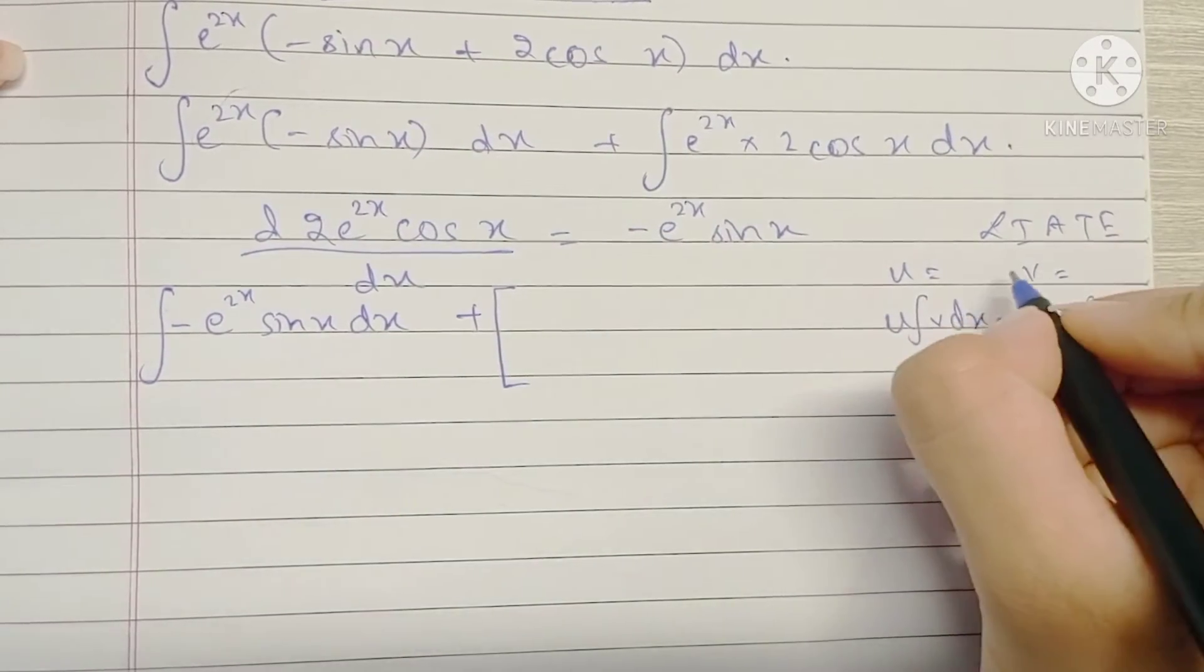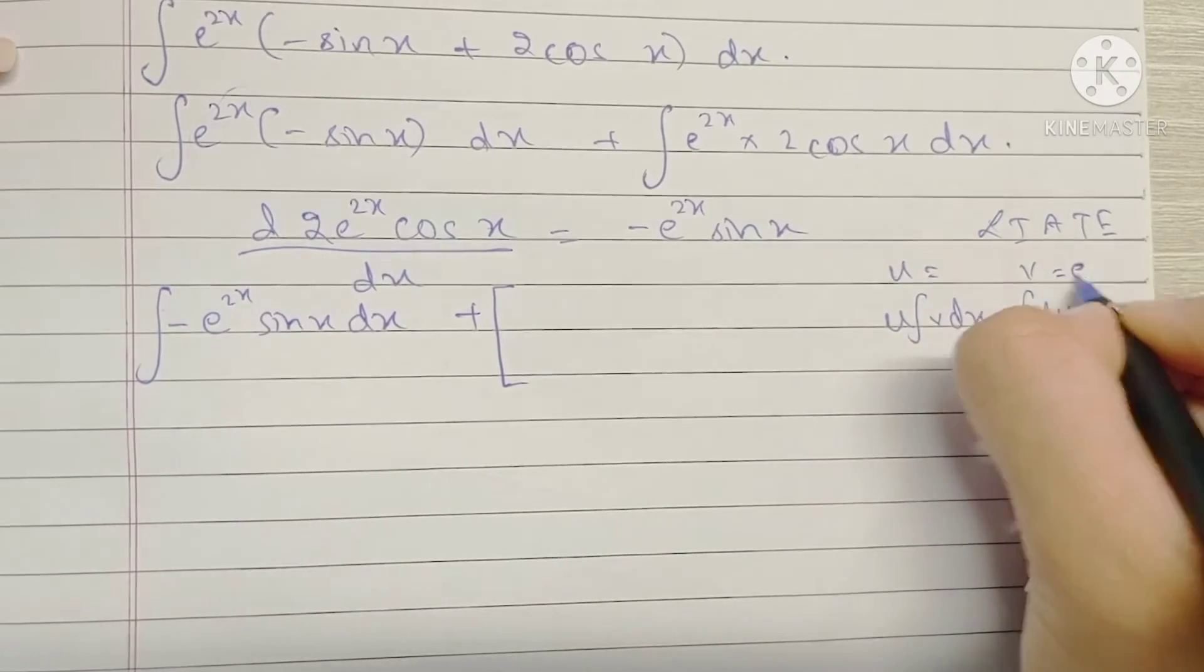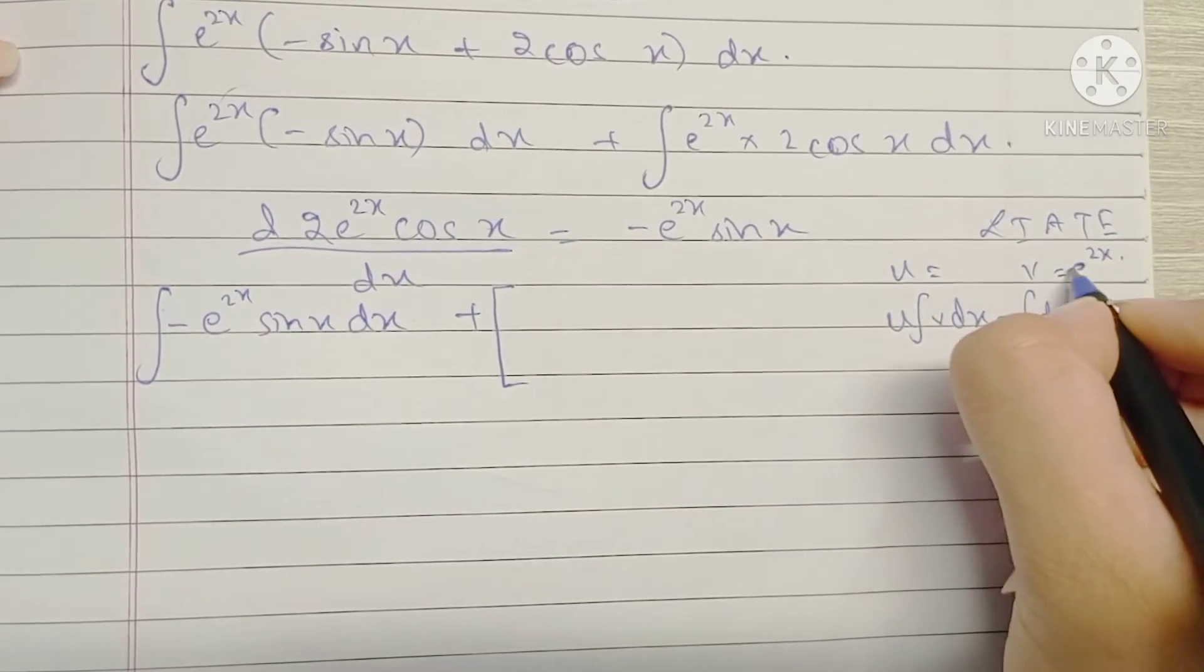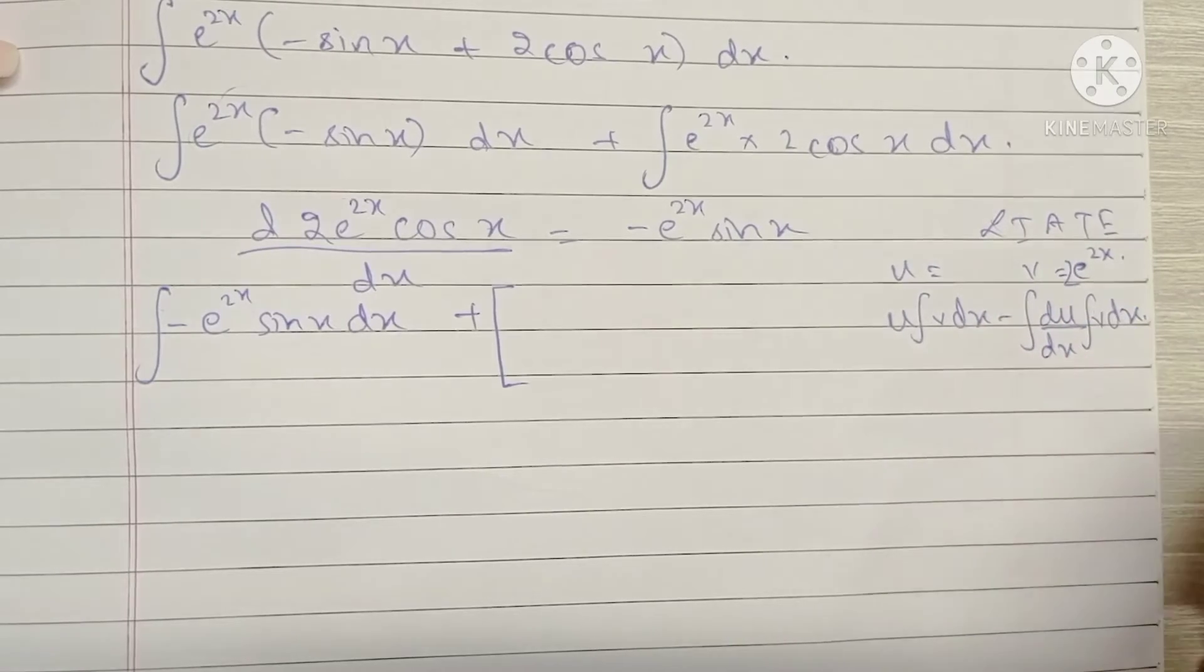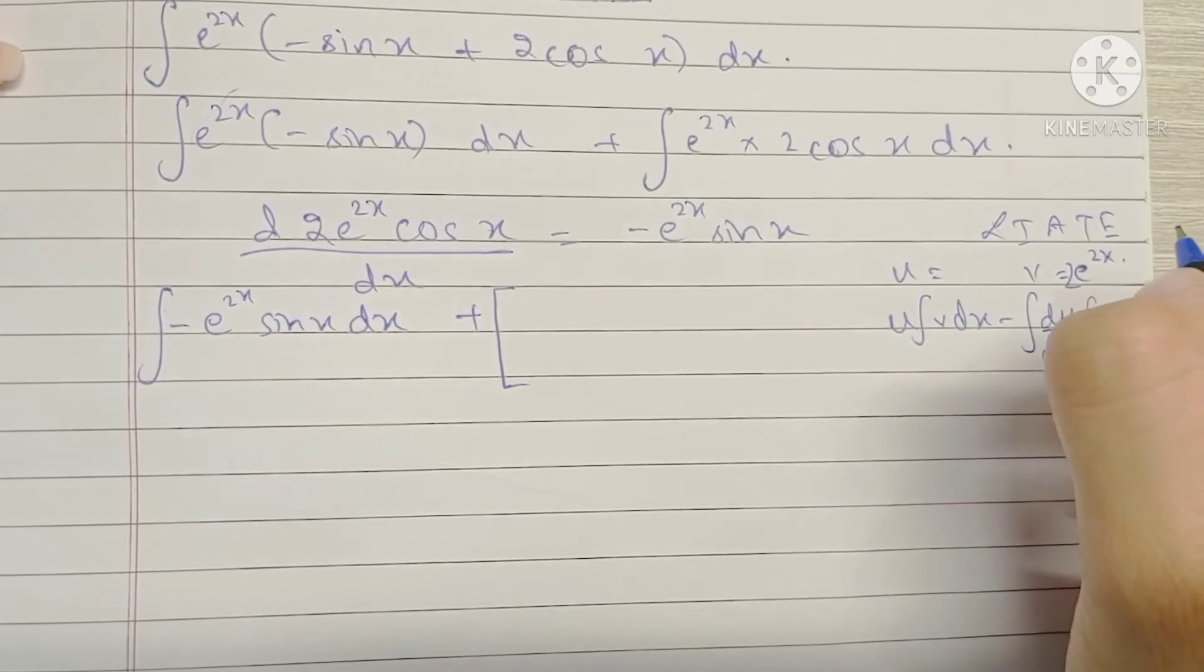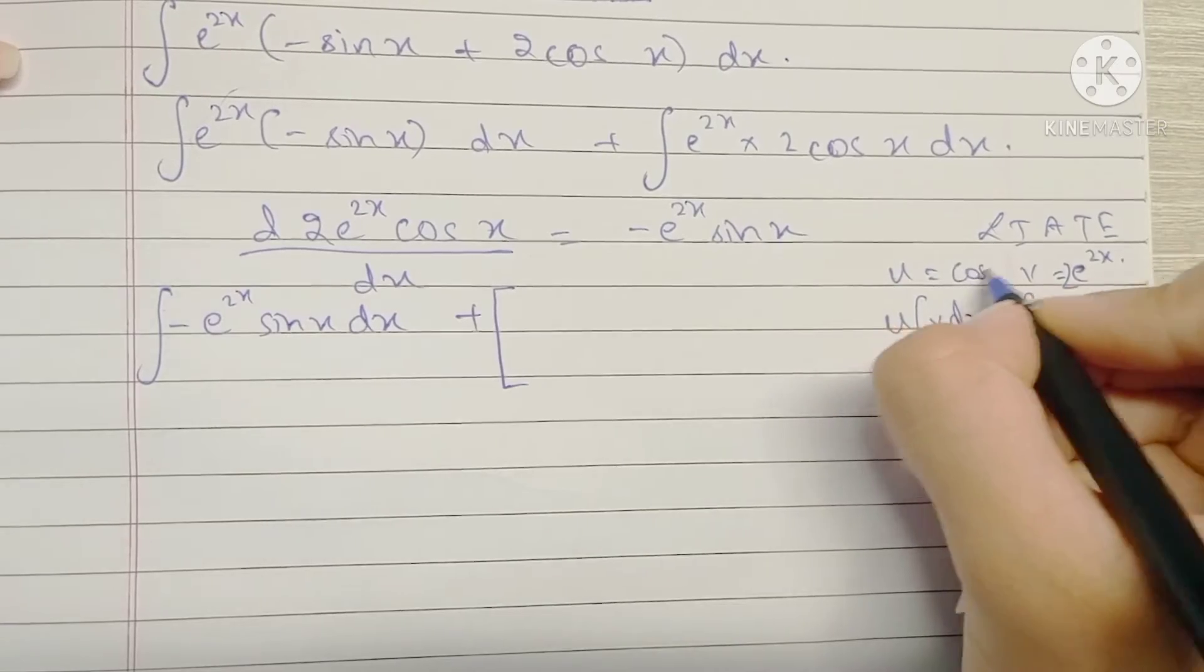We're going to be placing e raised to 2x as v using the LIATE rule, and sorry let's just place this as 2 e raised to 2x. It doesn't matter, it's just a constant and we can place u as cos x.